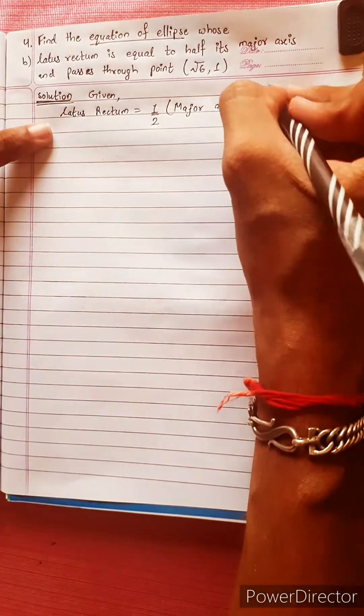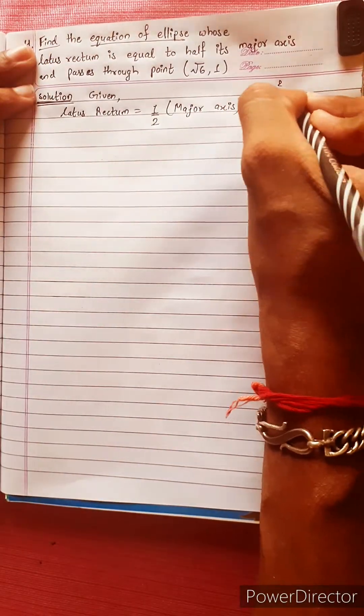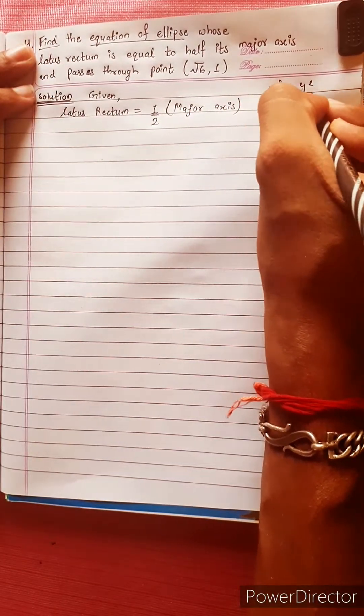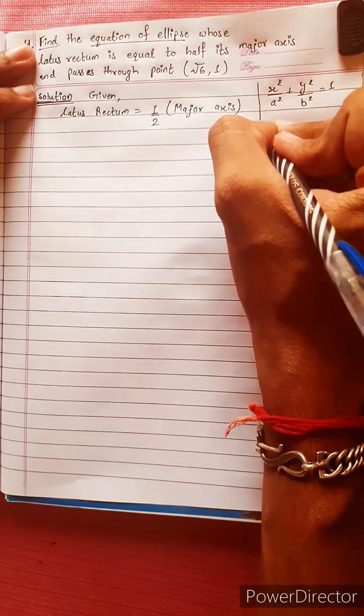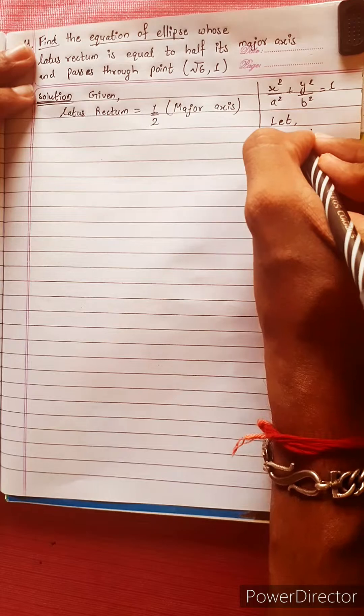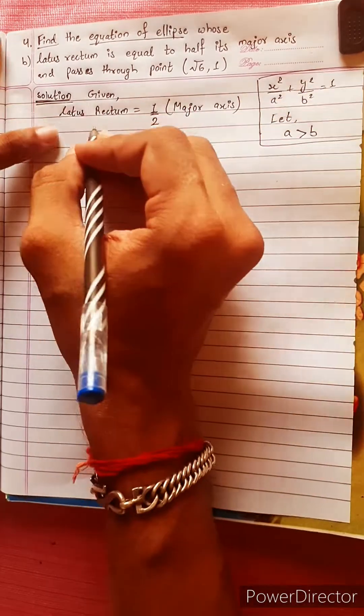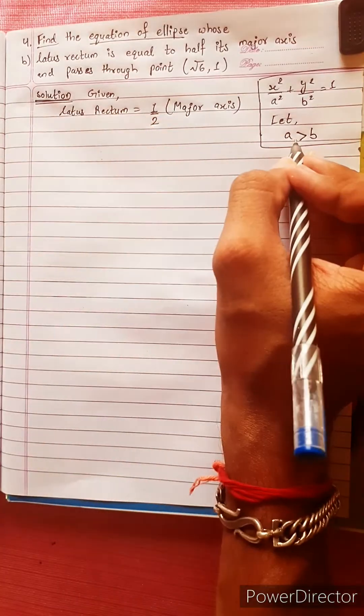Let us see. Let us make an equation: x² by a² plus y² by b² equals to 1. Let us make a greater than b.